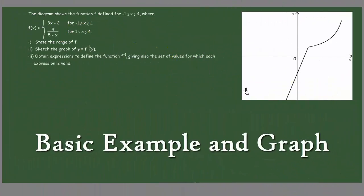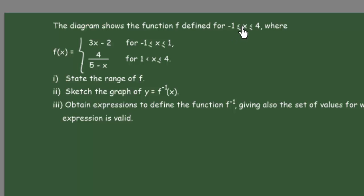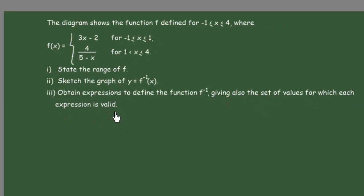Hello guys. In this video we have a piecewise function like the diagram shows, which is defined for -1 ≤ x ≤ 4, where f(x) has two pieces: the first one defined on the interval [-1, 1], and the second one 4/(5-x) on the interval [1, 4]. We want to state the range of the function, sketch the graph of y = f⁻¹(x), and obtain expressions defining f⁻¹ with the valid intervals. Our function is defined in pieces, so we will work out the range in pieces as well.